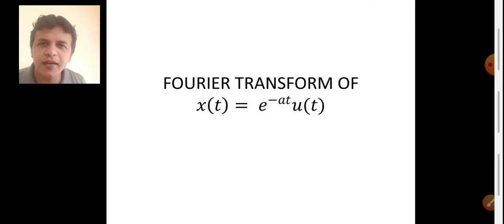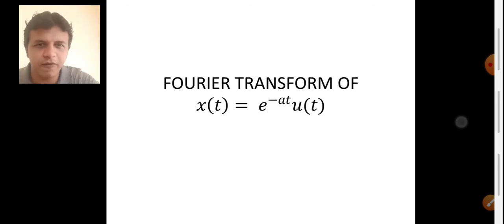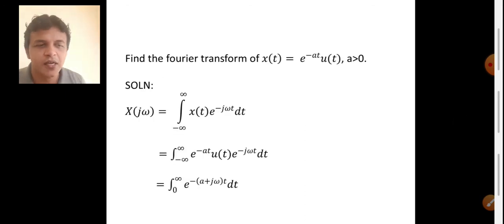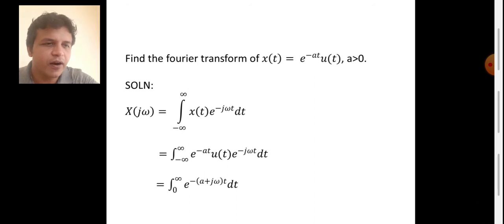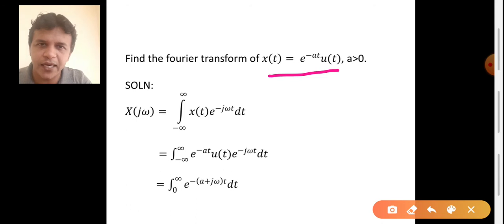Before entering into the video, don't forget to subscribe to my channel Easy Lecture. The question here is: find the Fourier transform of x of t equal to e power minus at into u of t, provided a is greater than 0.